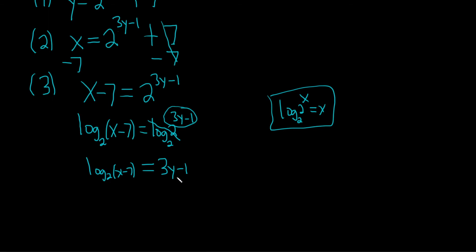Almost there. We're looking for y, so we'll now add 1 to both sides. Plus 1, plus 1. These go away. So we have 1 plus the log base 2 of x minus 7, and that's equal to 3y.